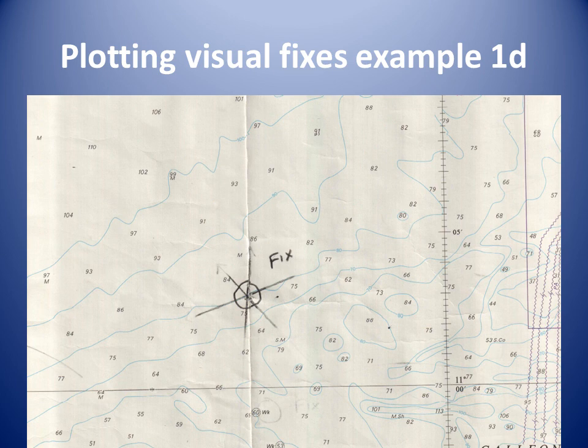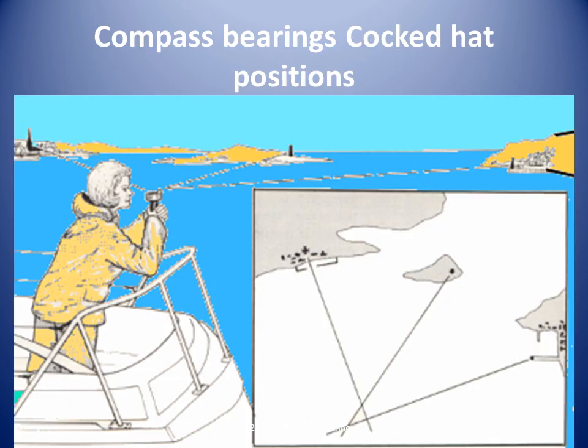On paper charts, navigators do not usually draw parts of the position line that they are not going to need. It is also uncommon for the position lines to intersect perfectly. When compass bearings are taken of three marks, it is unlikely that the three position lines will meet at one point, instead forming a triangle known as a cocked hat or three-point fix. Some of the common errors in laying of bearing position lines include a mismatch between what you took a bearing of and where you were plotting the line from, or an error in the conversion from magnetic to true. A good guide to accuracy is the size of the cocked hat — the smaller, the more accurate the plot.